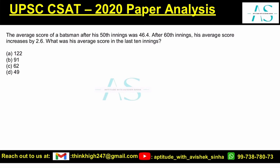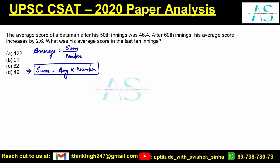The batting average of a batsman after 50 innings is 46.4. This is a question on averages. The most basic formula is: average equals sum upon number of observations. From this we can derive that the sum of observations equals average into number.